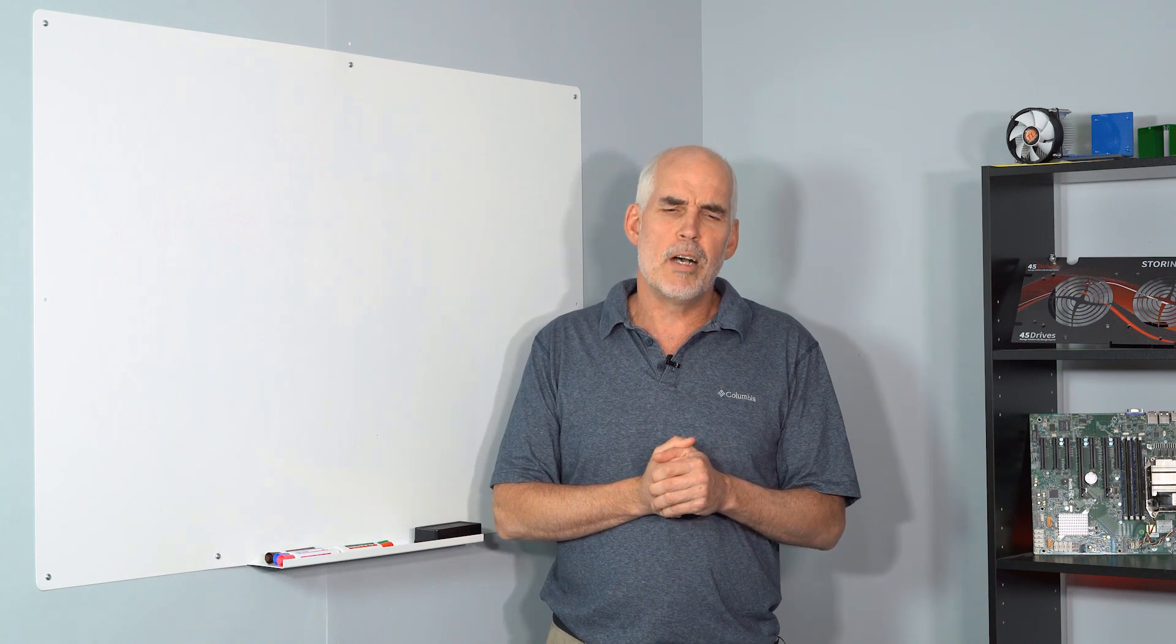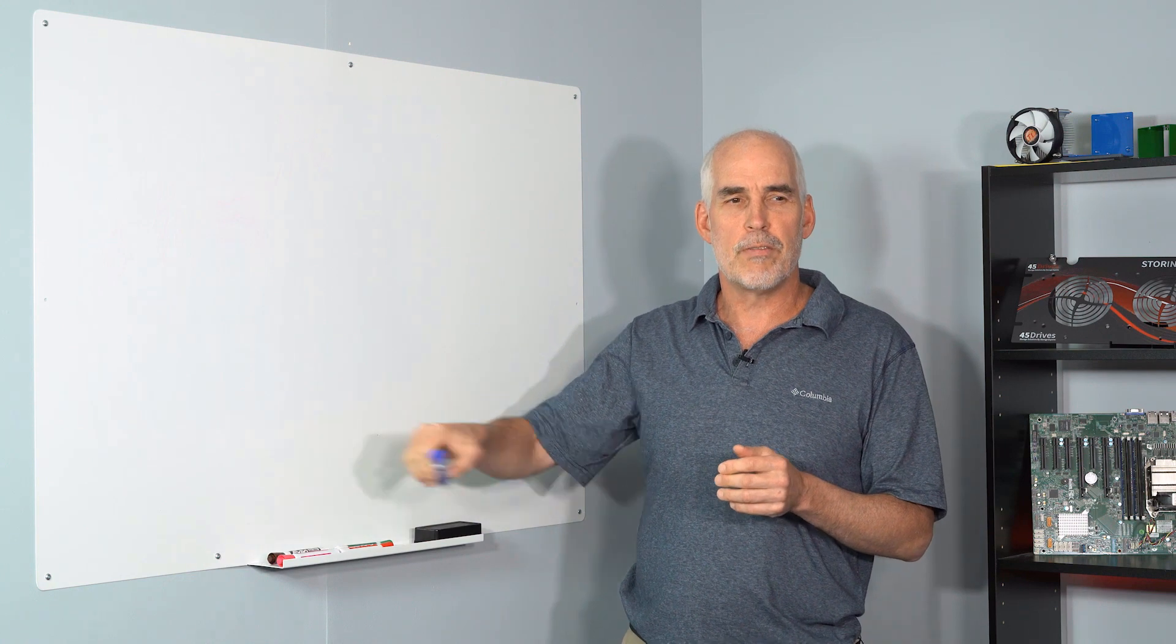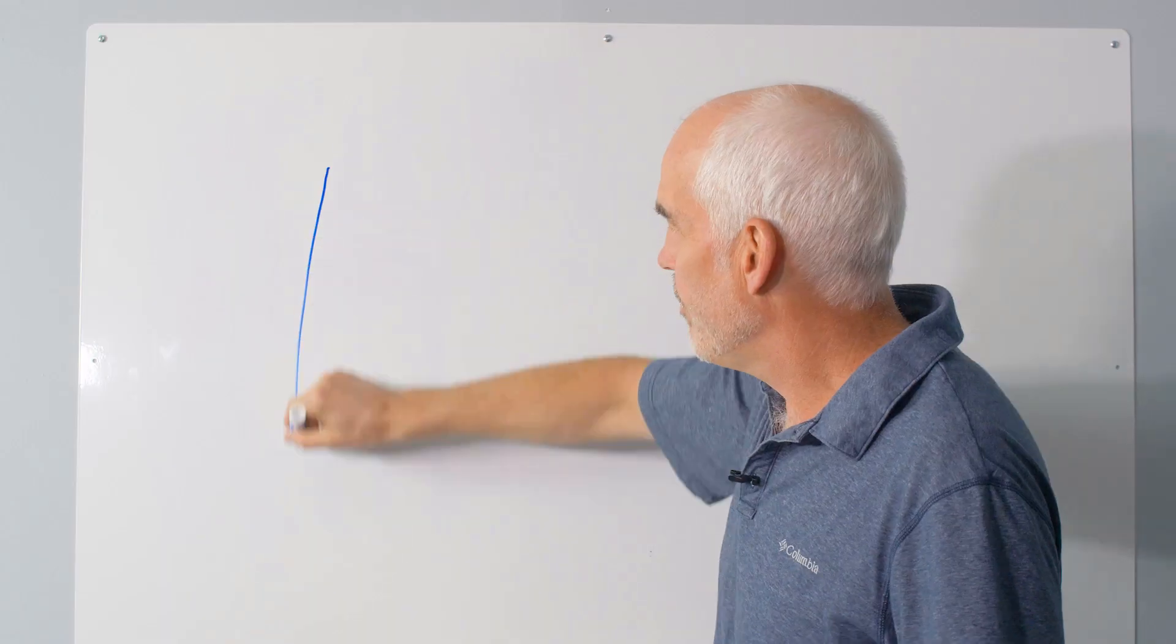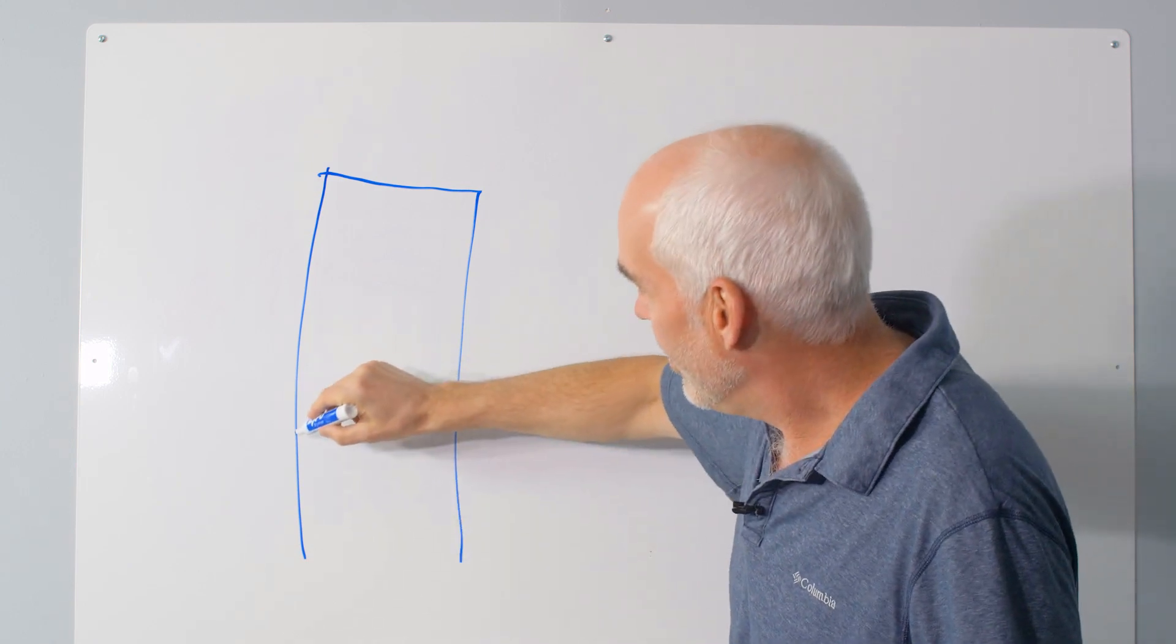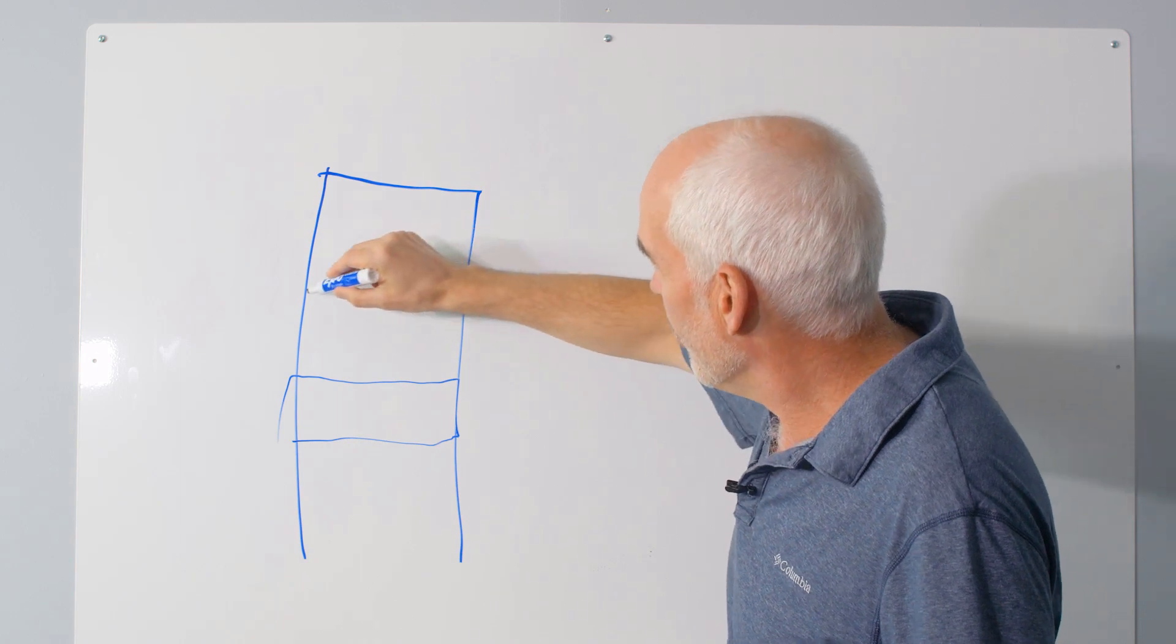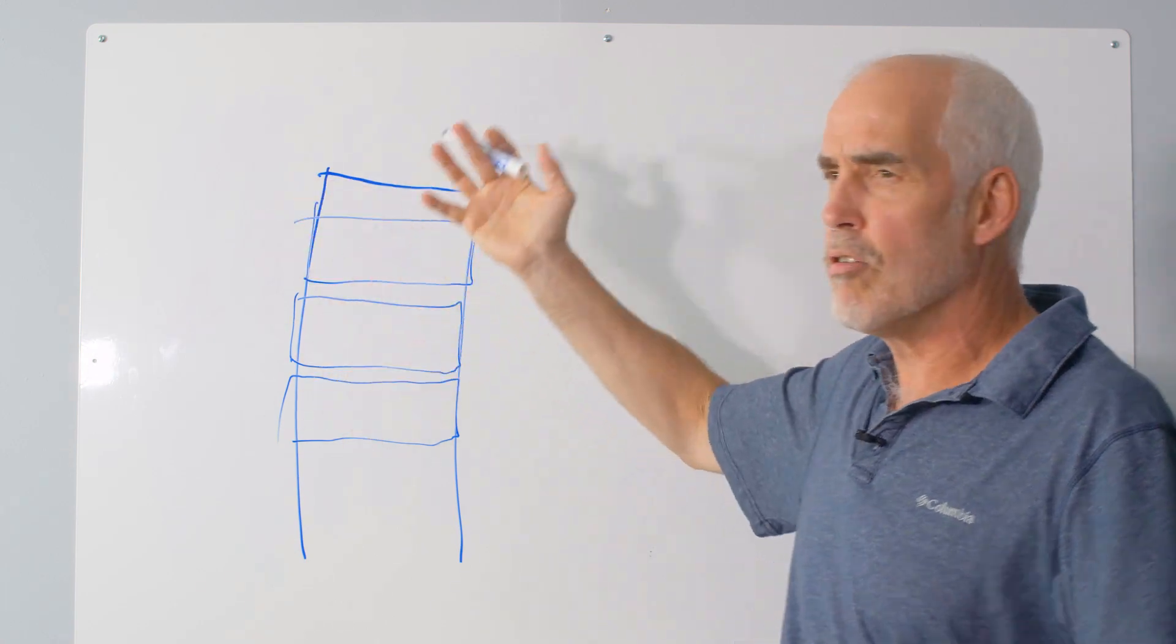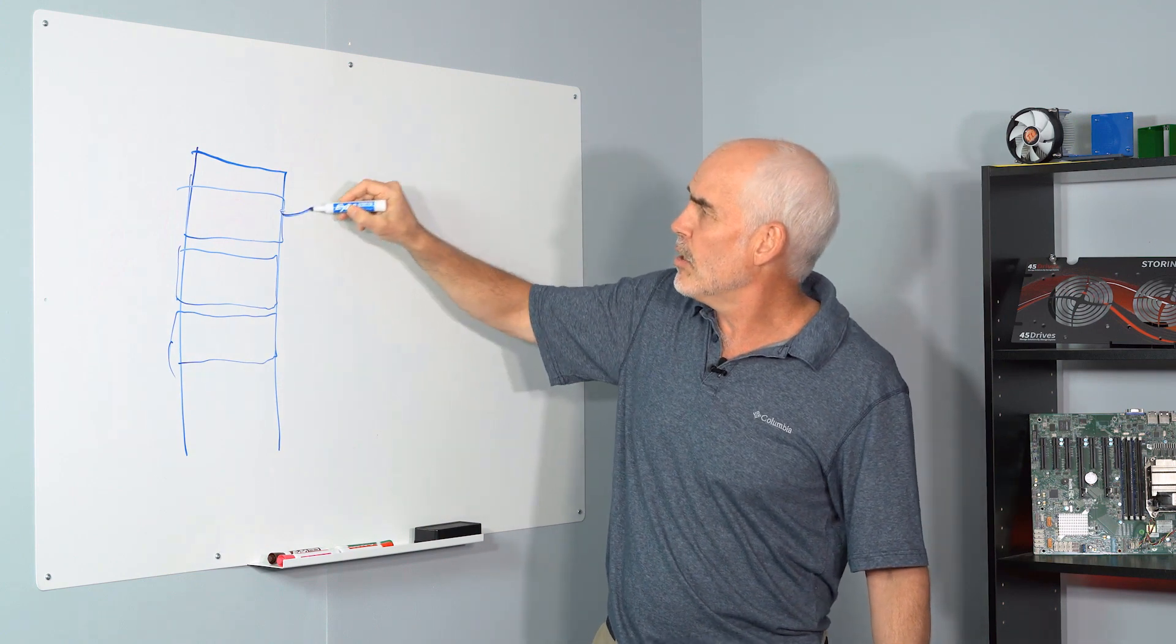First thing about Ceph: the minimum configuration. I like to think about this stuff in terms of servers that go into a rack that are connected into a network. Let me draw up my starter Ceph cluster in a very physical way. This is a rack: server number one, server number two, server number three. The number of hard drives in here doesn't matter for what I'm going to talk about.